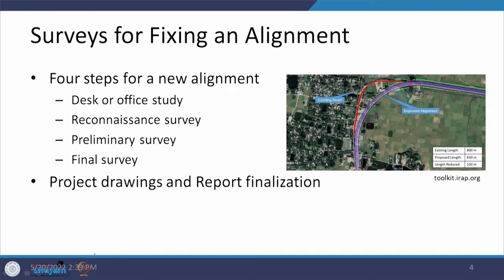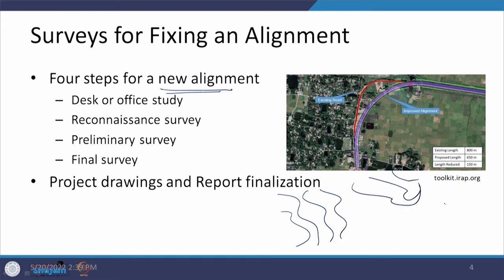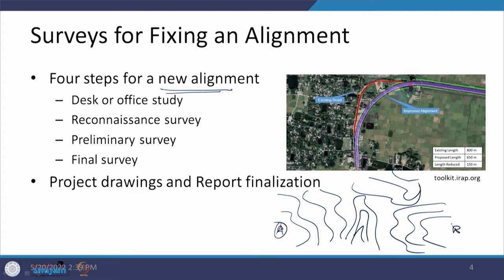Now when we come to these surveys, there are usually four steps when we are going for a new alignment. That means it is a virgin area — we are interested to connect two locations A and B, and we have to identify in which direction our alignment should pass. If you remember, in the previous interaction we talked about various types of contours and how we traverse them to reach from point A to point B.